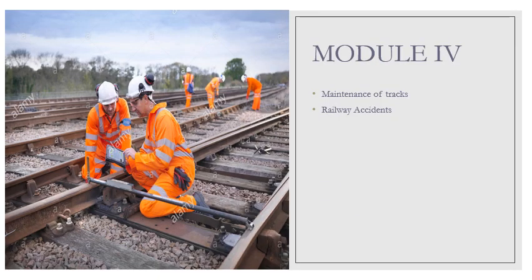We are all familiar with trolleys running through railway tracks and the man walking along the track hitting it with a hammer. We might wonder what the purpose of that trolley or that fellow is. We will learn all these facts in Module 4, which mainly focuses on the maintenance of railway tracks. At the last part of this module we will discuss the causes of railway accidents and major accidents that have happened in our history.